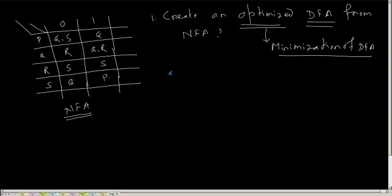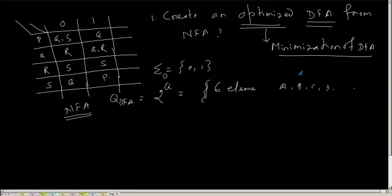What will be the starting state? What is the alphabet set? It is 0 comma 1. The set of states will be 2 to the power Q. Q DFA will be 2 to the power Q, that is everything. So it will be 16 elements.